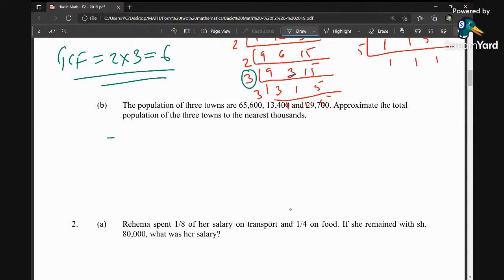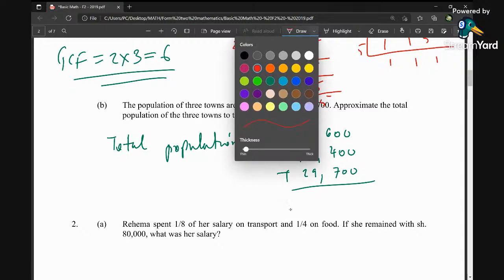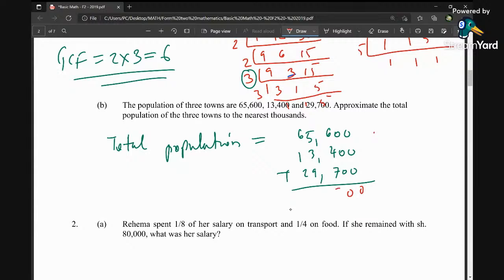We have to find the total population. Total population equals 65,600 plus 13,400 plus 29,700. First of all we are going to add them. When you add them here you're going to get 0, 0, 17. 17 is 8, plus 9 is 18. We take 1, it is 7, 8, plus 2 is 10. So summation of population of 3 towns is 108,700.